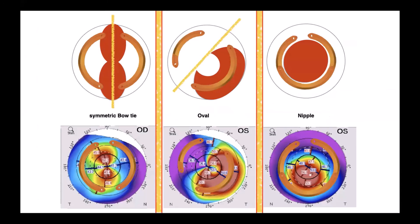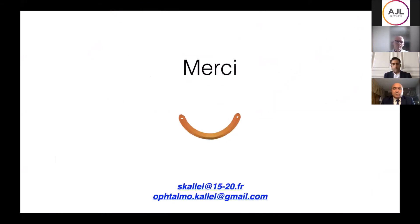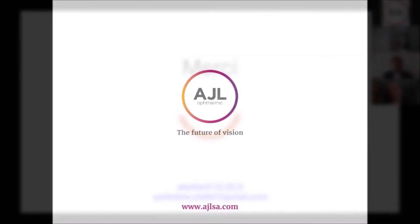In conclusion: symmetrical keratoconus — bowtie, oval, and nipple — needs symmetric corneal rings. For asymmetric keratoconus — snowman, duck, and lobster claw — we need intracorneal ring segments, but progressive ones. Thank you so much.